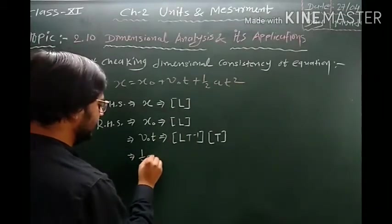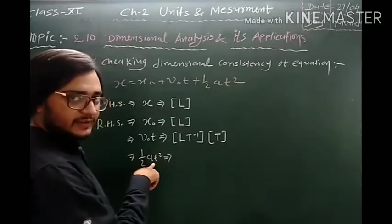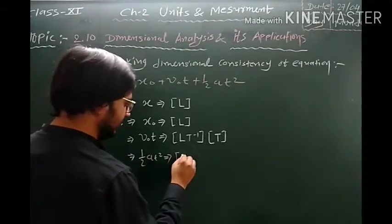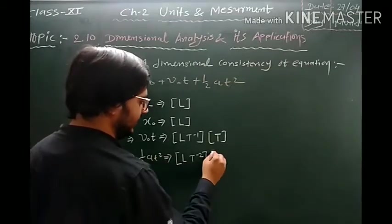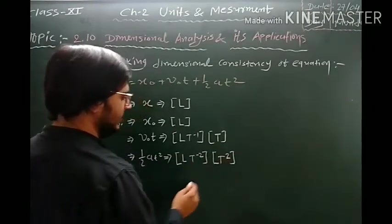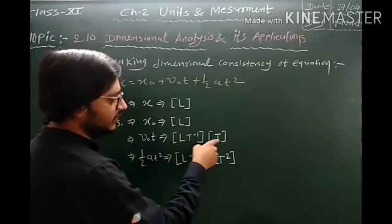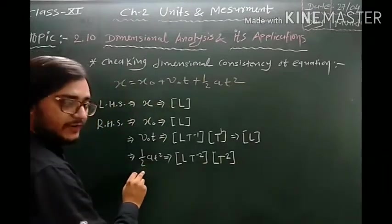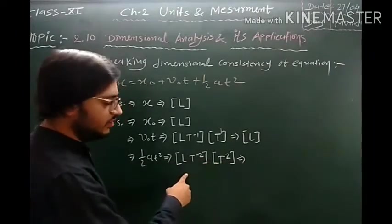We also have the term ½at². Half is a dimensionless integer constant. A is acceleration, measured in meter per second squared, so its dimension is L·T⁻². The dimension of time is T, and here it is squared, so T². In the term v₀T: L·T⁻¹ and T¹ cancel out, giving L. In the term ½at²: T⁻² and T² cancel out, giving L.